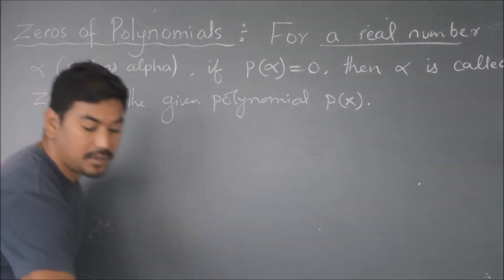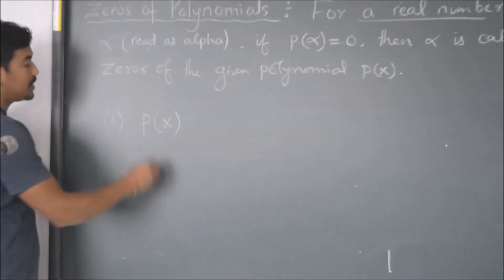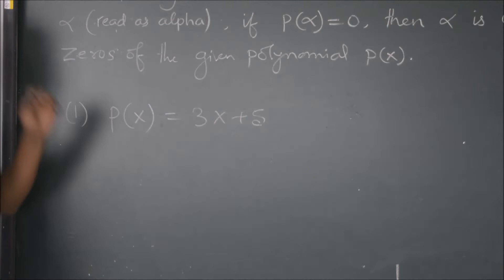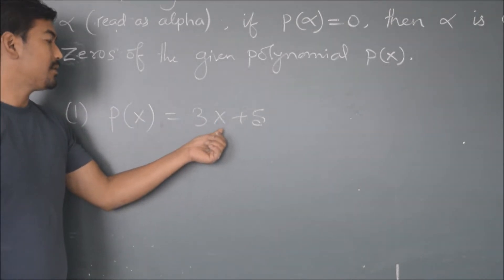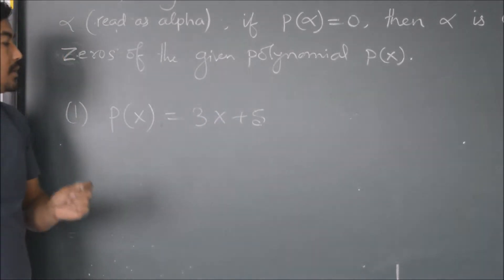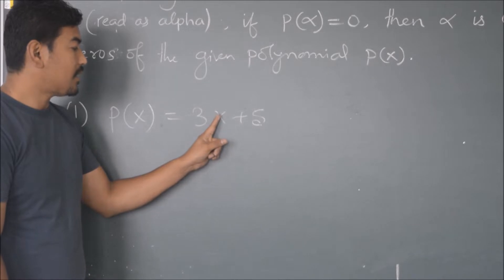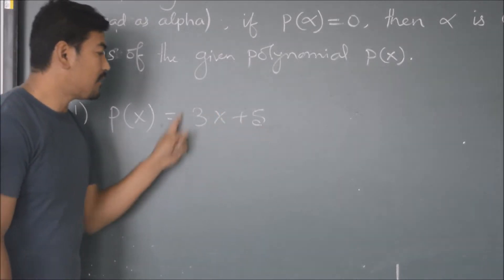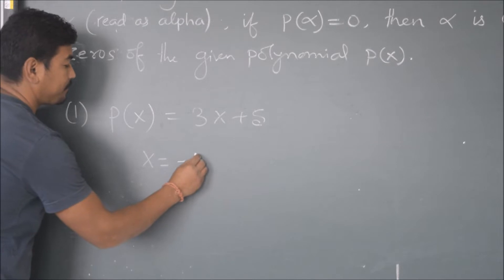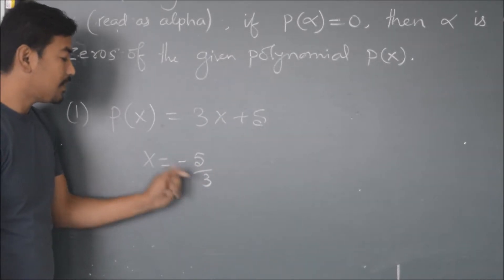Let me give two examples to make this clear. Example one: suppose we have a polynomial p(x) equals 3x plus 5. This is our given polynomial and x is the variable, so you can put any number in place of x. Let me think of a number such that the value of this whole polynomial becomes 0. Let me try x equals minus 5 by 3.